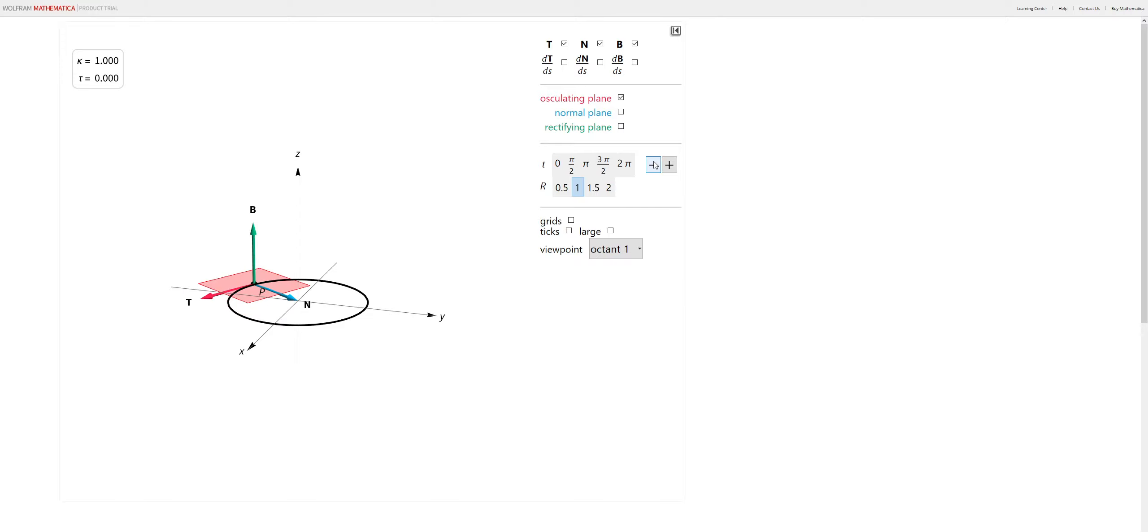And so the unit binormal vector b, the direction of the osculating plane is not changing. Remember, that's what b is telling us is the direction of that plane. So b is not changing, and so torsion is zero. And so this osculating plane, we don't move out of the osculating plane. It stays the same throughout the entire trajectory.